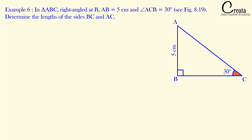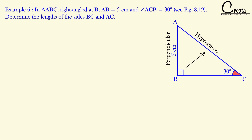Perpendicular is the side which is opposite to the trigonometric angle. Angle C, that is 30 degrees, is the trigonometric angle, so AB is the side opposite to it — AB is the perpendicular. Hypotenuse is the side opposite to the 90-degree angle; angle B is 90 degrees, so AC is the hypotenuse. The third remaining side BC is the base. So we have identified all the trigonometric sides and can now easily apply the trigonometric ratios.